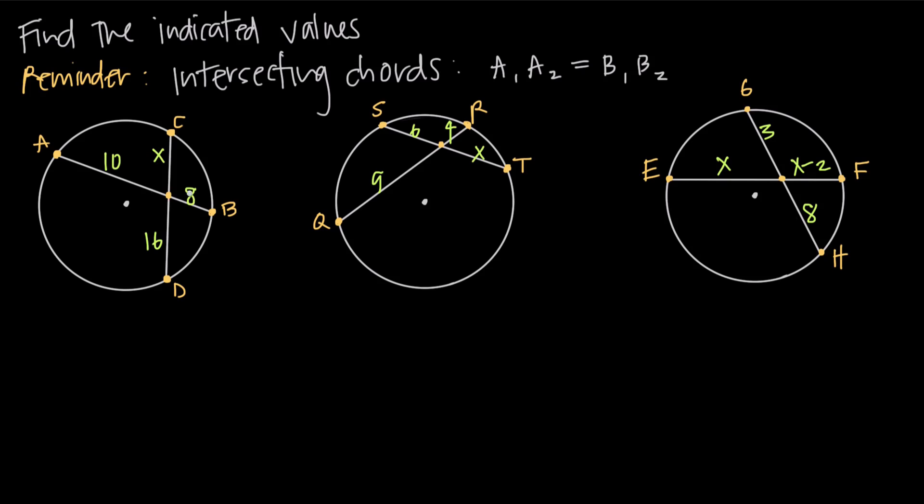So in other words here, let's look at the two segments for chord AB. That's 10 and 8. So if we say 10 multiplied by 8, we can set that equal to the lengths of these other segments for chord CD, which are x and 16. So we'll do 16 times x, and then we can solve for this unknown value of x.